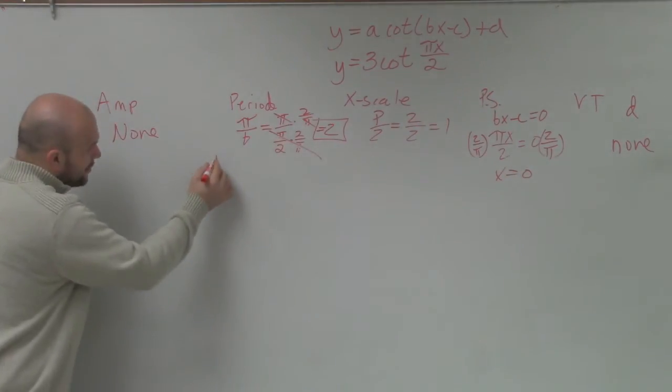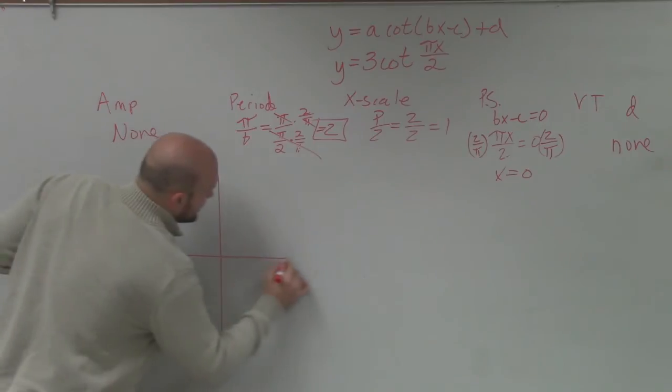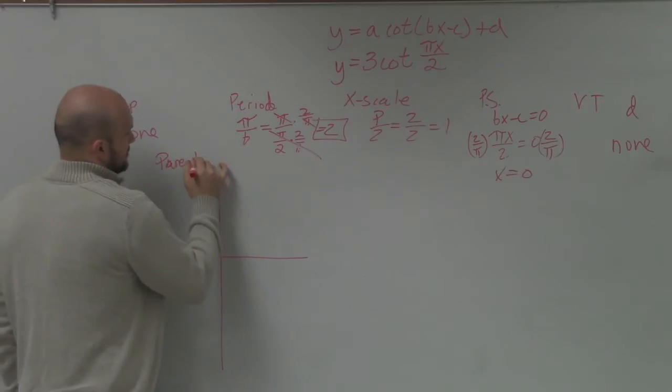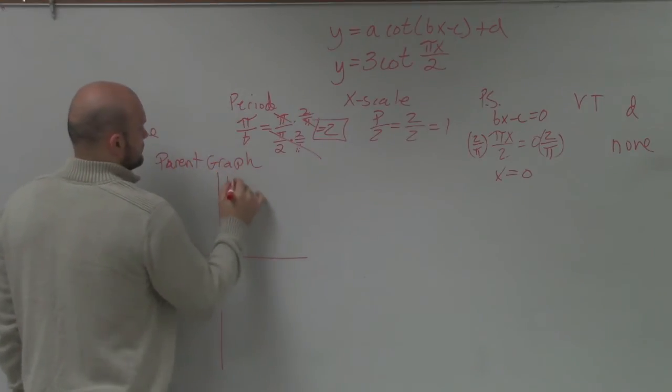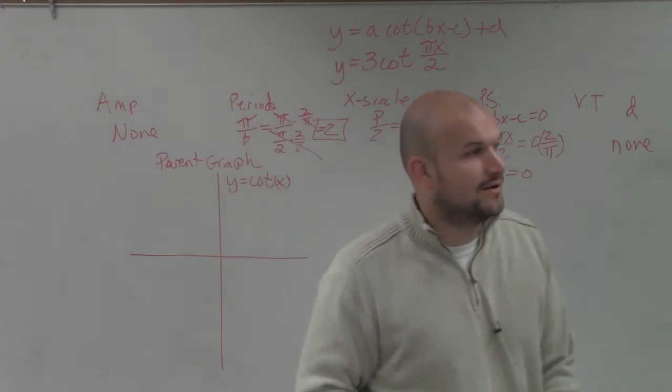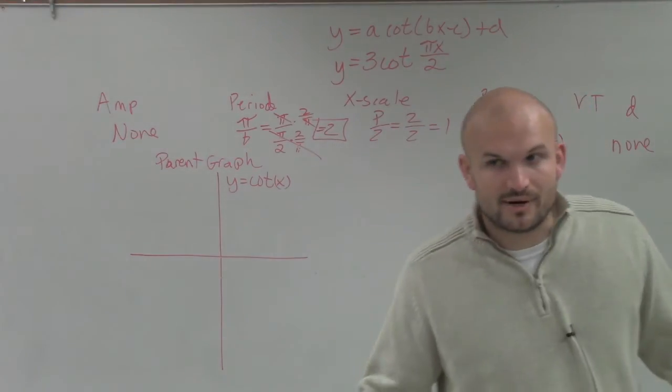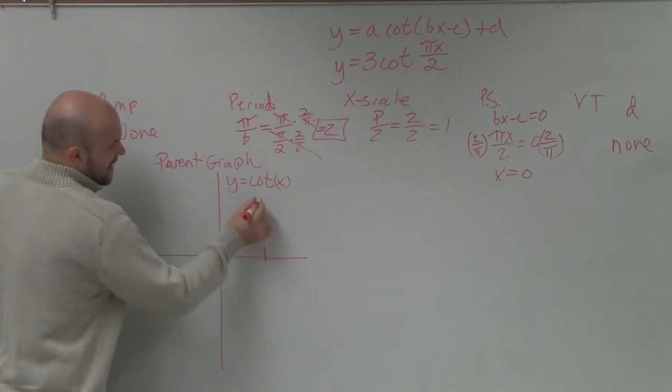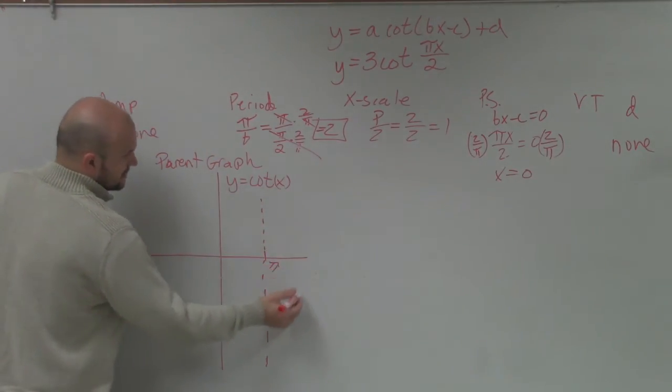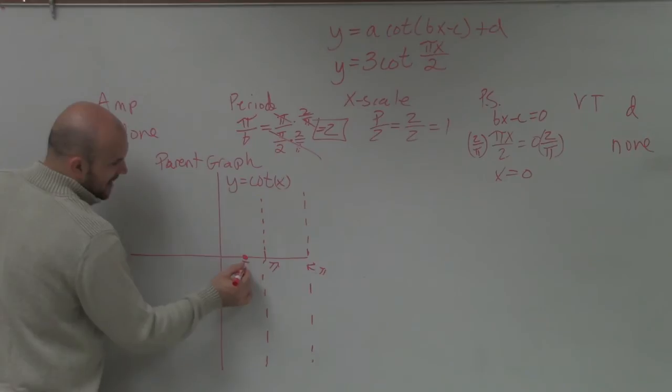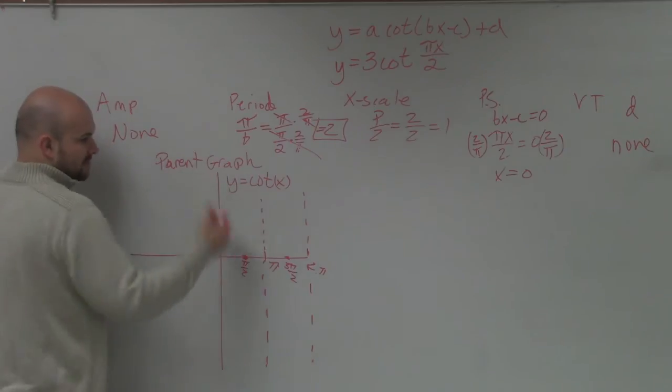The next extremely important information is we have to know what the parent graph of the cotangent looks like. That means, what does cotangent of x look like without any transformations, without moving anything anywhere? So remember, the cotangent graph has a period of pi. At that period of pi, we have an asymptote. Then you have an intercept at pi halves, intercept at 3 pi halves, and the graph falls left, rises right.